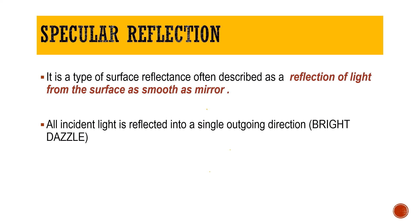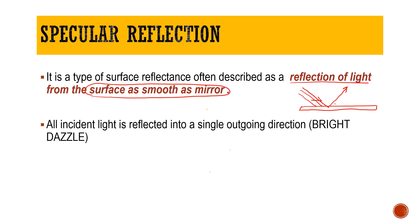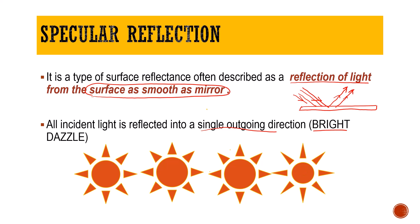What is meant by specular reflection? Specular reflection is defined as a type of surface reflectance — a reflection of light occurring from a surface as smooth as a mirror. When light is incident on such a smooth surface, almost the entire incident light is reflected back in the same direction into a single outgoing ray. Because all the incident light is reflected in one direction, the reflection is very strong and causes a bright dazzling light effect — that is called specular reflection.